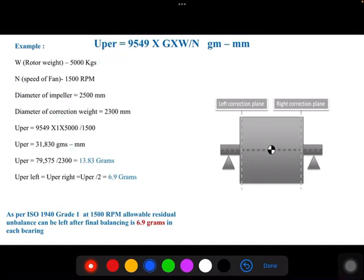So if you go for the lower grade, again OEM has done the balancing by applying the balancing grade G1. So in place of this formula, you put here G as 1. Remaining all the parameters are same. The weight, impeller diameter, RPM are same. Then you get 31,830 gram-mm, then you need to divide by this 2300, then 13.83 grams per bearing, that is 6.9 grams. Means as per this standard, if you use the grade 1, then 6.9 grams is the allowable residual unbalance left after balancing.